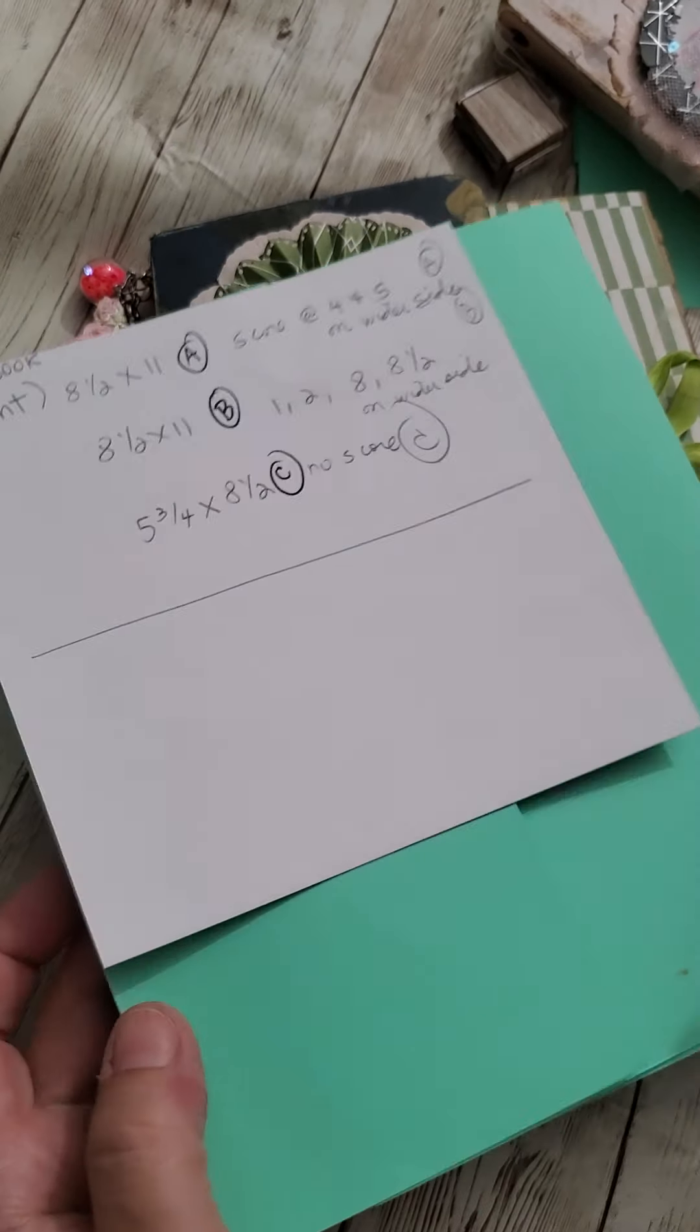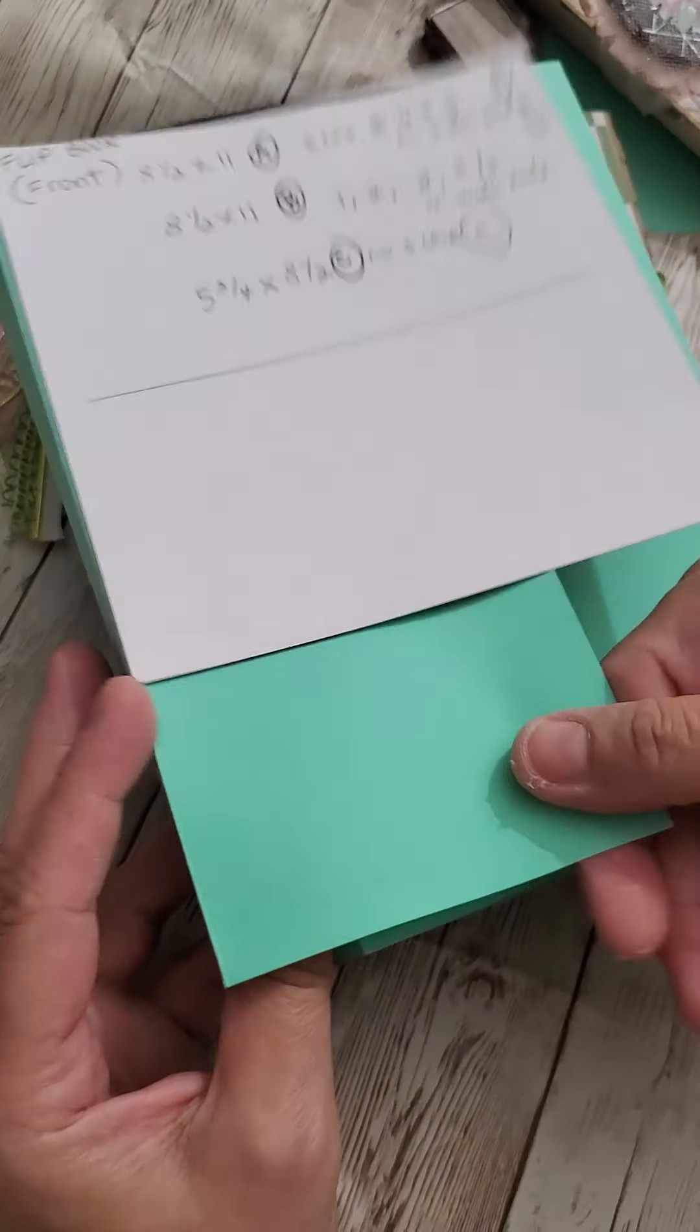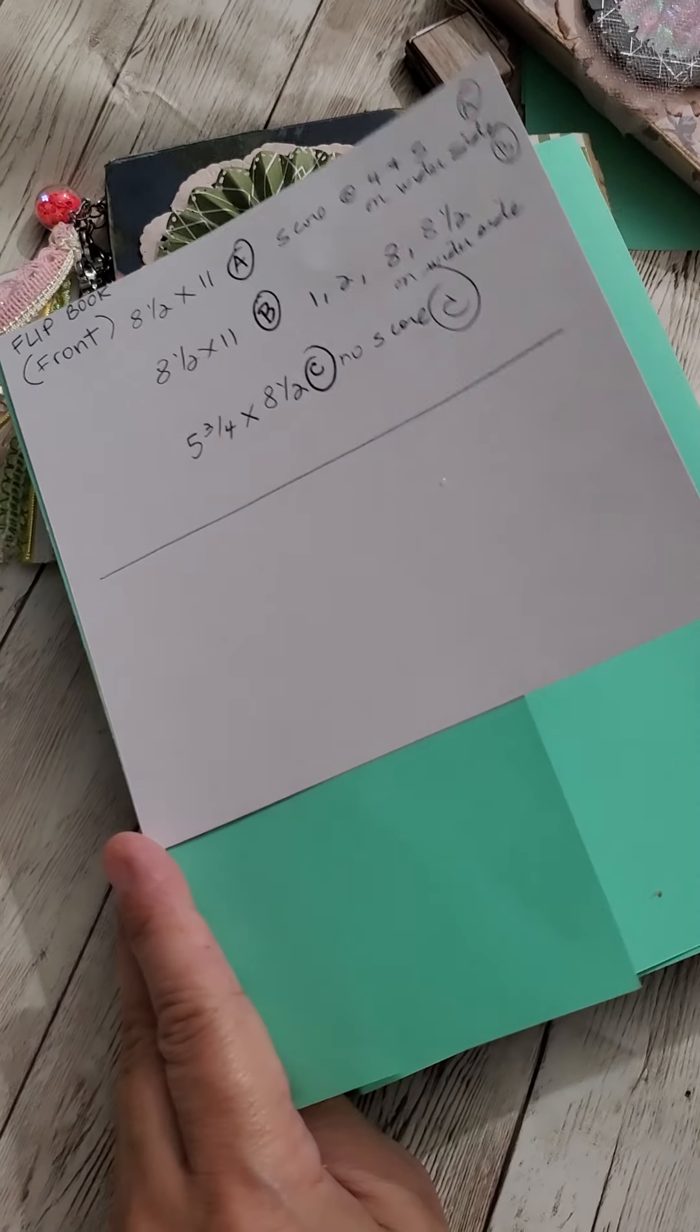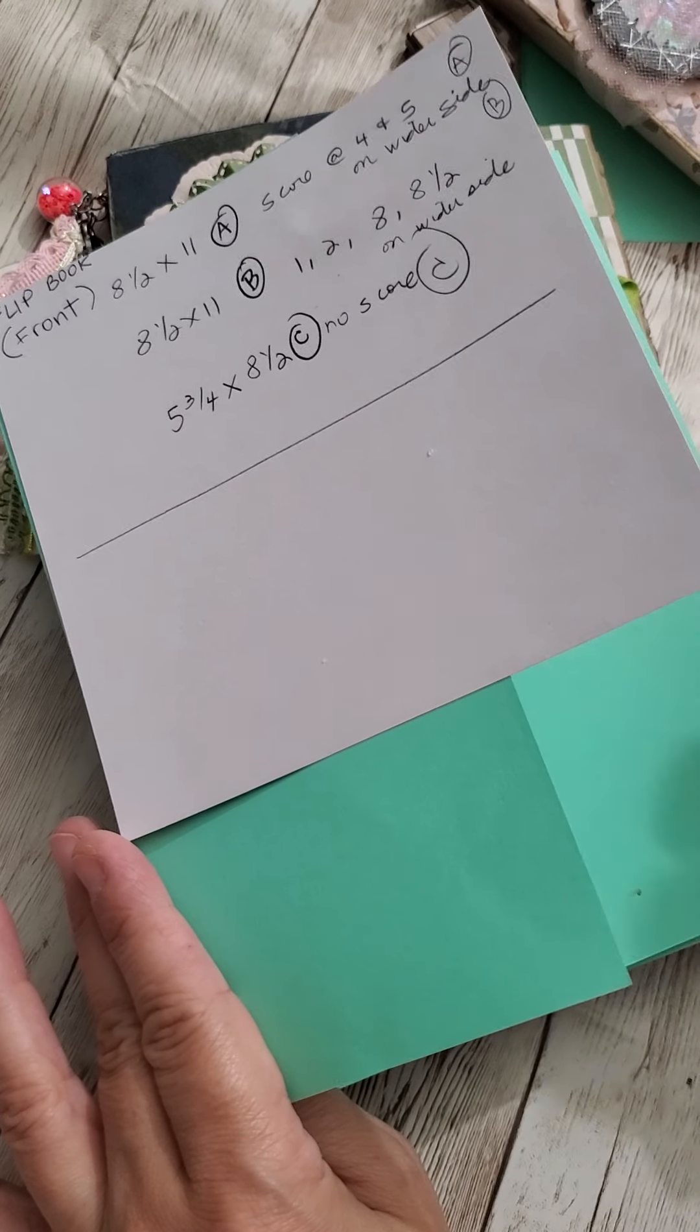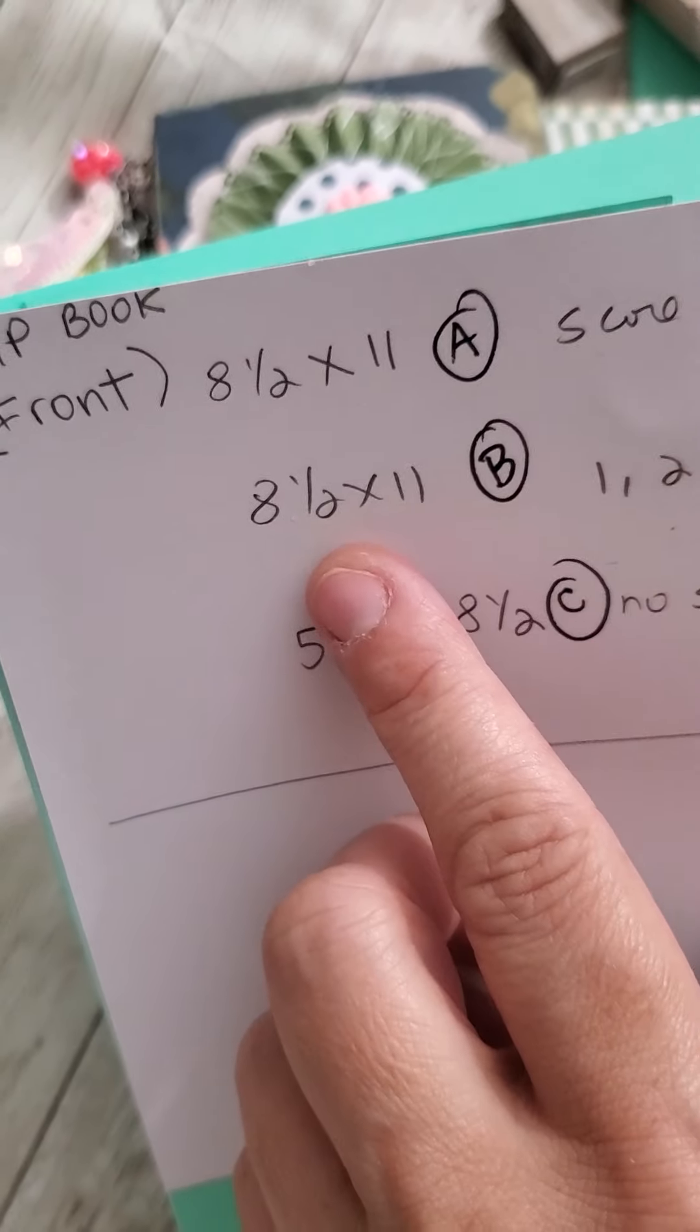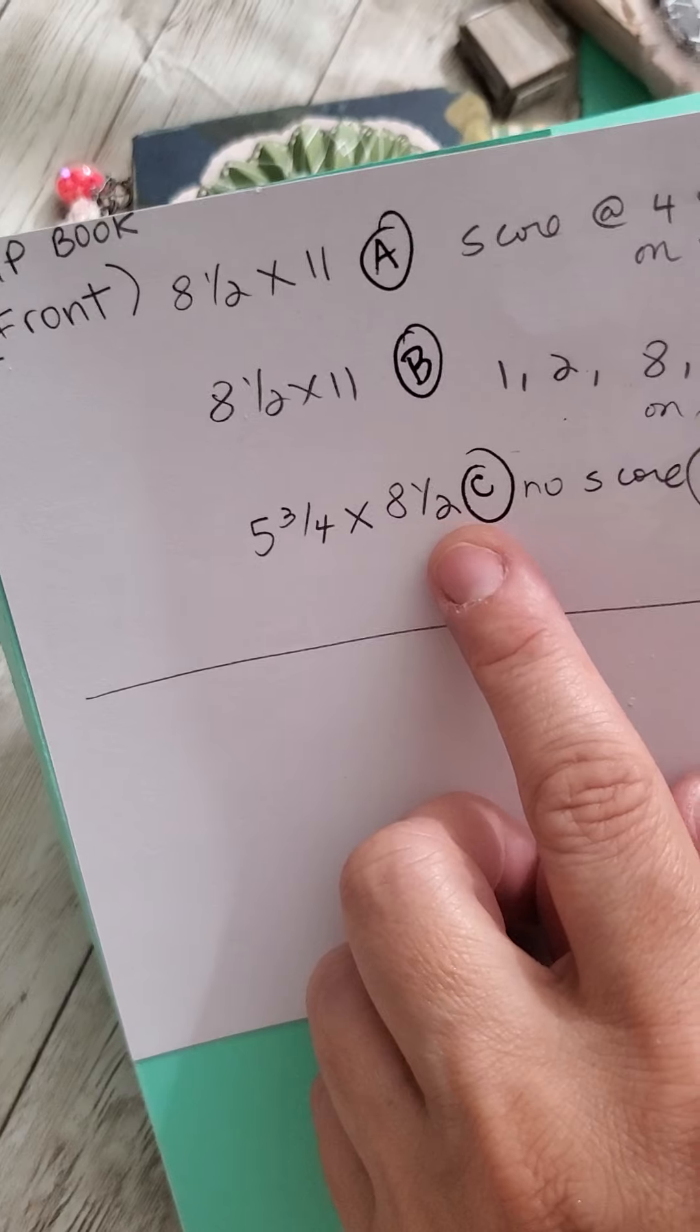The most important thing is the base of it should be some sort of heavy cardstock. As you can tell, this is just paper. That's because this is my sample. I tend to make samples of things that I really like, things that I want to make again. So this consists of three sheets of three different cuts. So the first one you're going to cut, so the first one's 8 1/2 and 11. The second one is also 8 1/2 and 11. And the third one is 5 3/4 by 8 1/2.